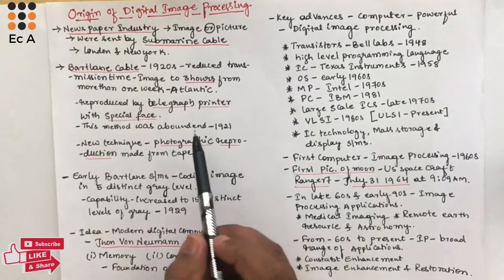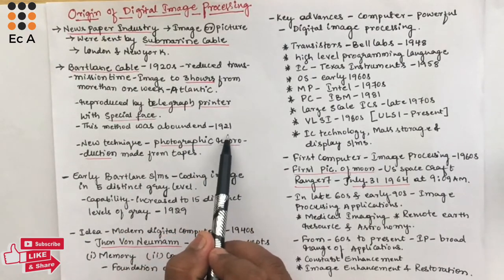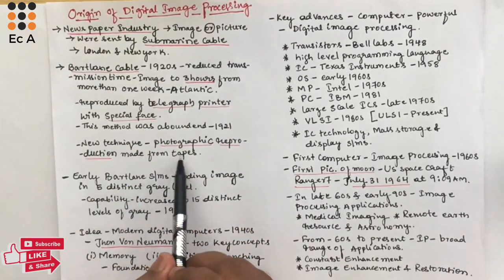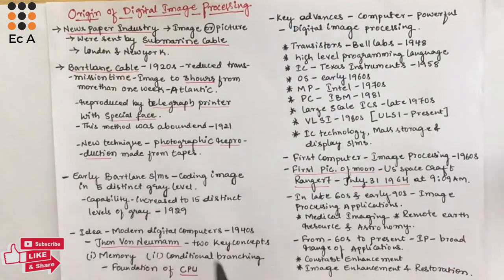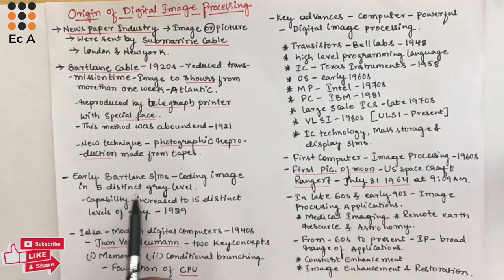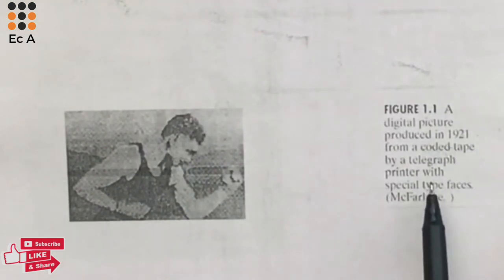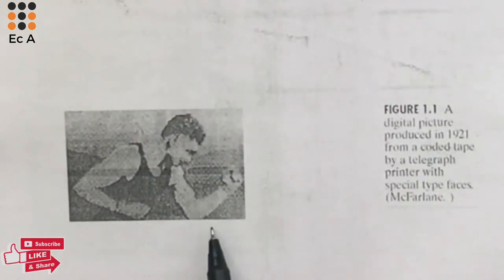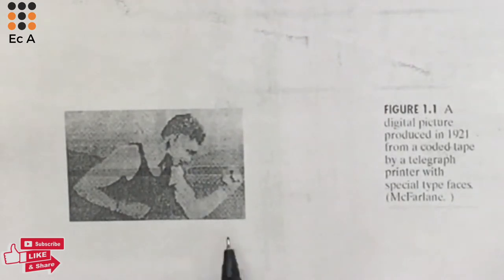Reproduction of images was earlier done using telegraphic printers. This method was stopped in 1921, and a new technique was introduced where images were reproduced using photographic reproductions made from tapes. Early Bartlein systems were capable of coding images in 5 distinct grey levels. This is one of the images reproduced in 1921 from a coded tape by a telegraphic printer with a special typeface — this image had only 5 distinct grey levels.